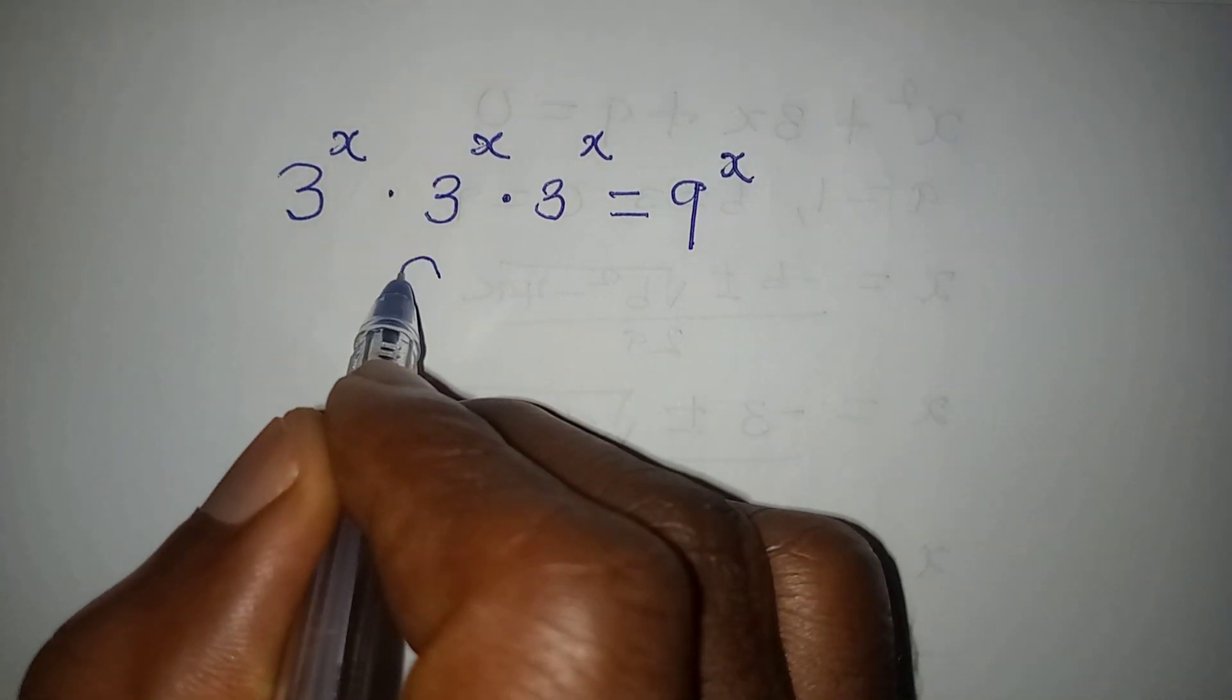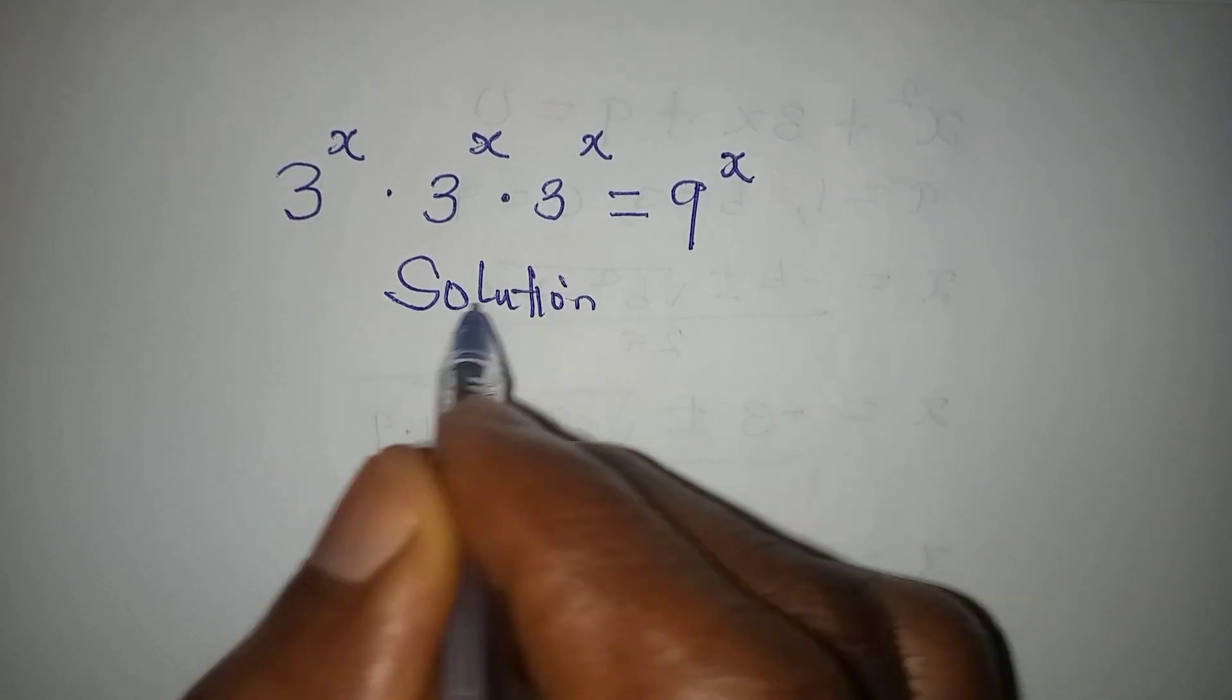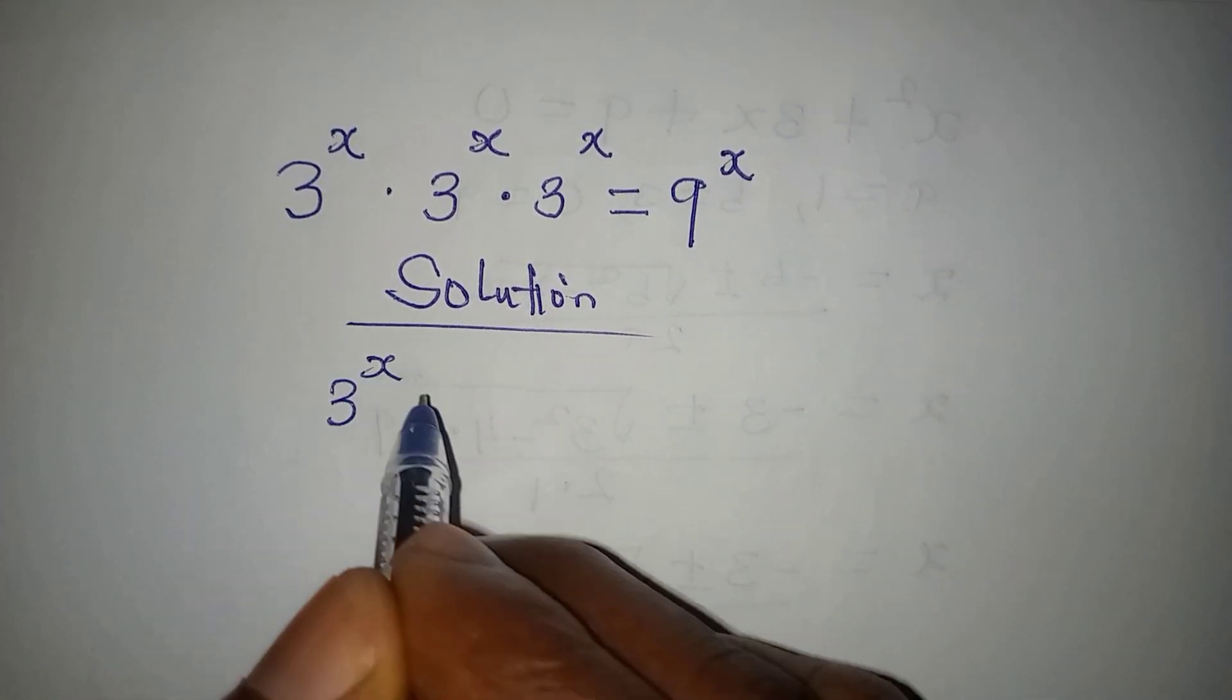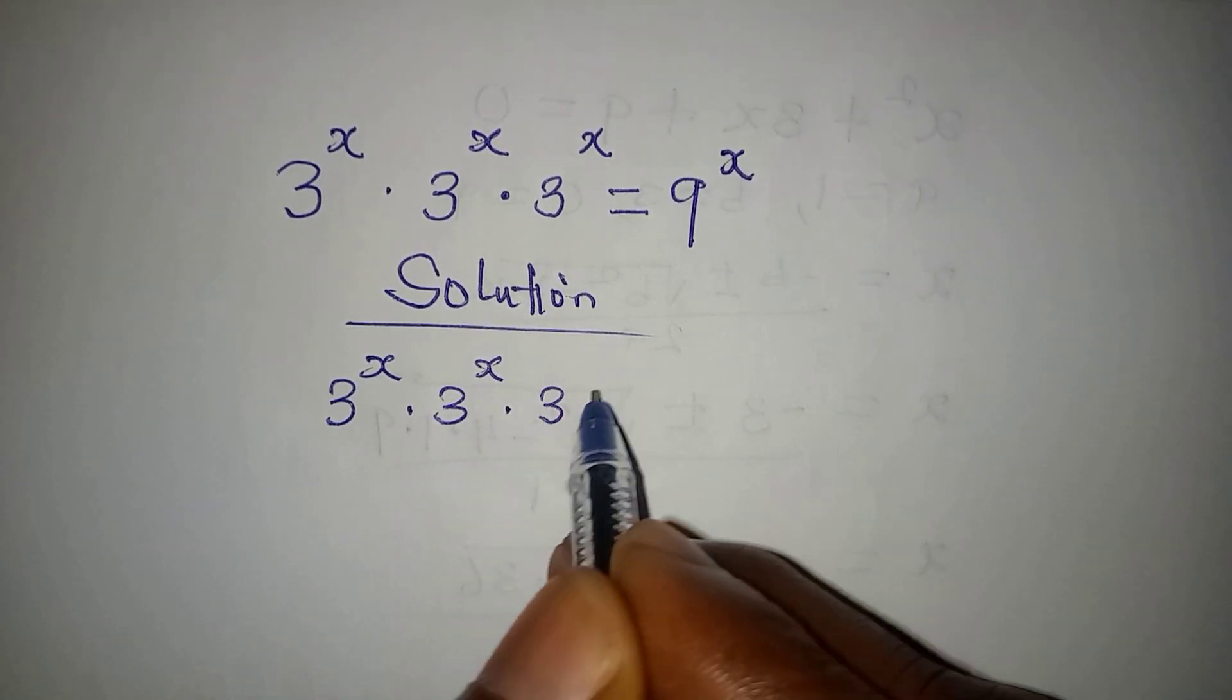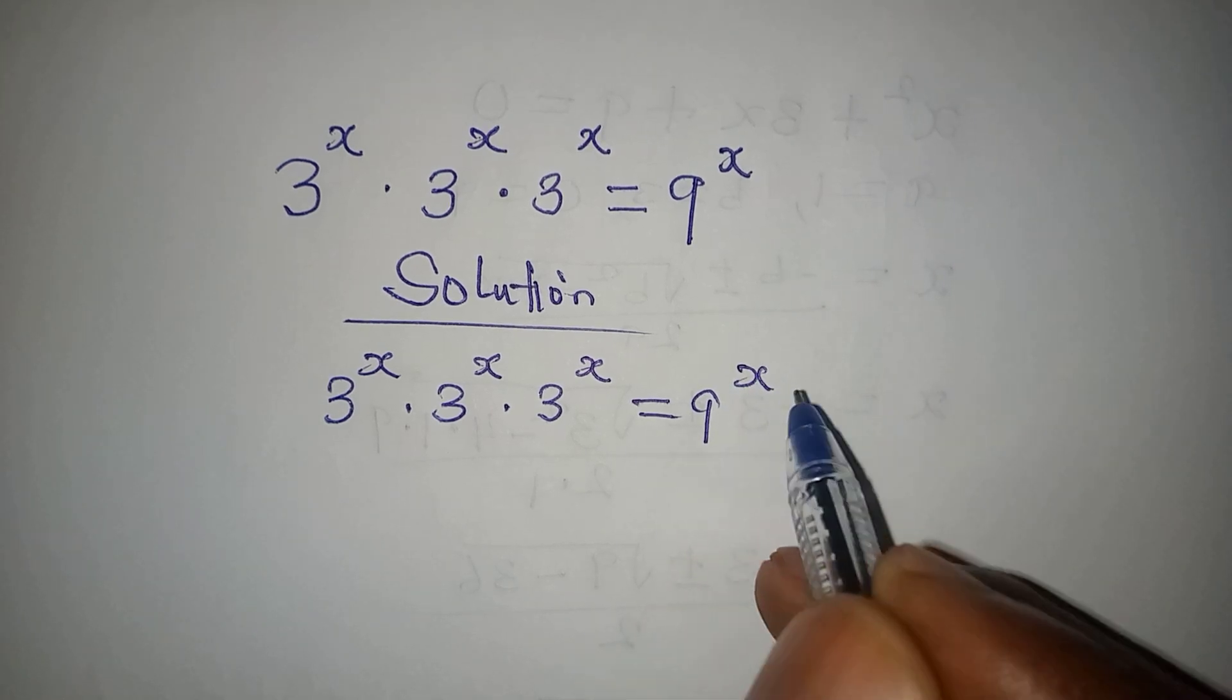Hello everyone, let's provide a solution to this problem: 3 to the power of x multiplied by 3 to the power of x multiplied by 3 to the power of x equals 9 to the power of x.